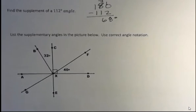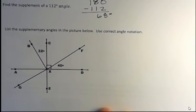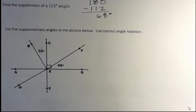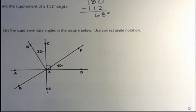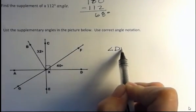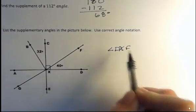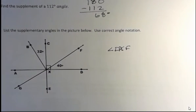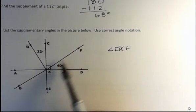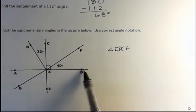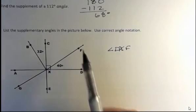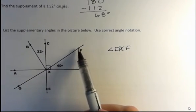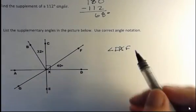Finally, I have the same picture that we had above, but find the supplementary angles in this picture. And I'll just do a couple of those. Again, there's no reason to do all of them, but let's say that I started with angle DXF. I have to put the X in the middle because that's the vertex. What angle is supplementary to this angle, DXF? Well, the angle that's supplementary to that would be angle FXA, right?